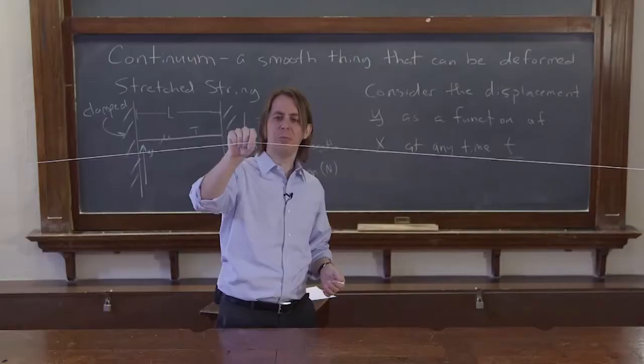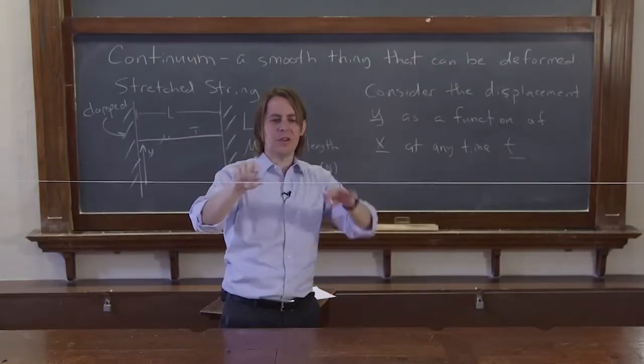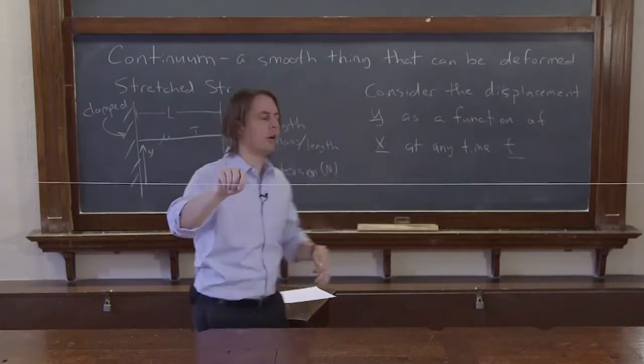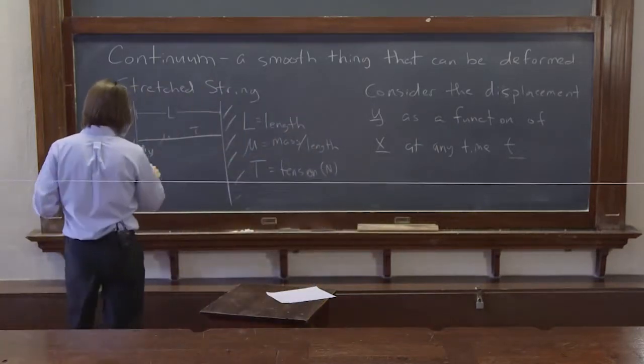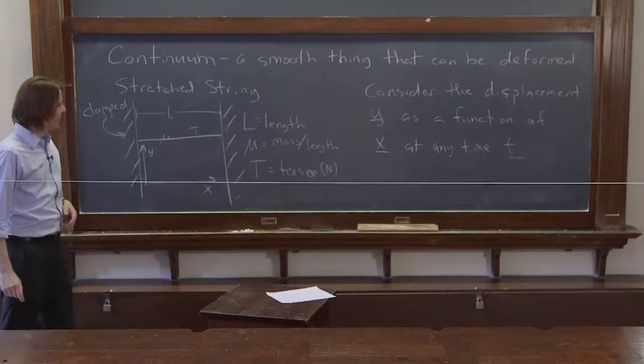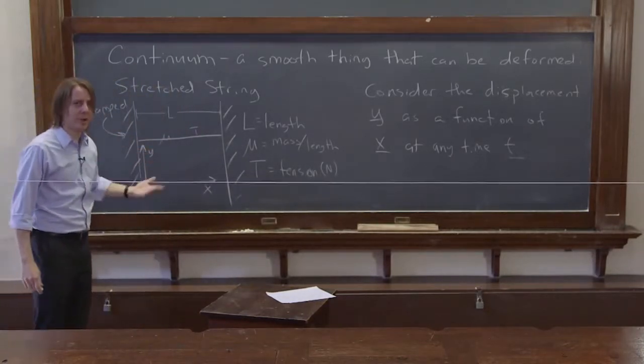So if this little piece of the string moves up, it increases its y. We could say its rest position is y equals 0. It could go negative y. It could go positive y. x is just the position along the string. And time is, of course, just time.